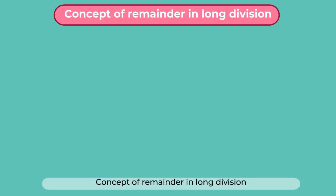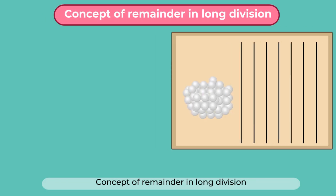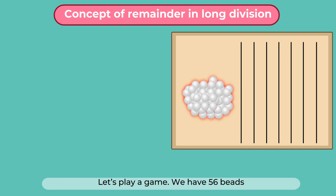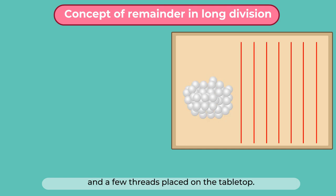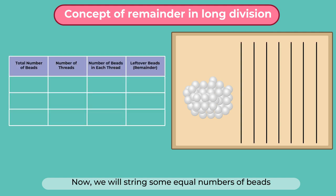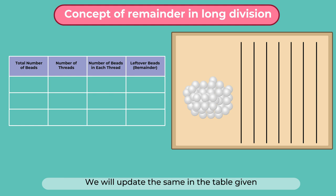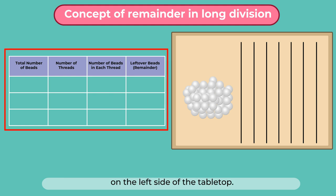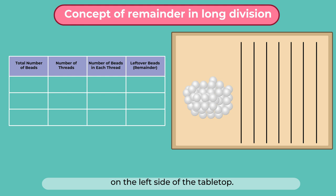Reinforcing the concept of remainder in long division. Let's play a game. We have 56 beads and a few threads placed on the tabletop. We will string some equal numbers of beads in each thread to see if we are left with any remainder, and update the results in the table given on the left side of the tabletop.